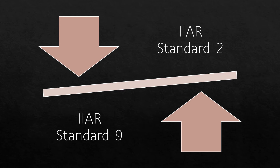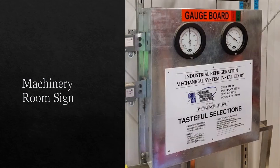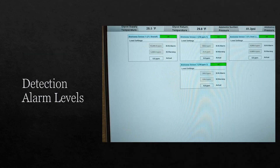Noteworthy differences between IIAR Standard 9 and Standard 2 include: the minimum low side pressure rating is 150 PSI in Standard 9 compared to 250 PSI in Standard 2. Machinery room signage need not include the test pressure that was applied at installation. Ammonia detection is not required outside of machinery rooms. The machinery room low level detection alarm must be activated at 50 PPM, as compared to 25 PPM in Standard 2.